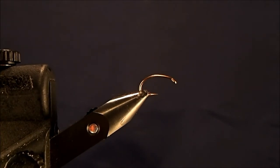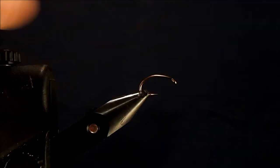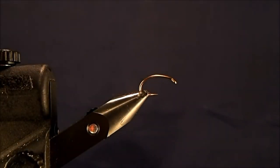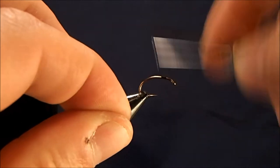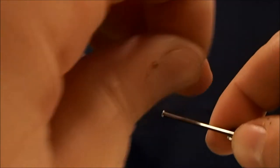This fly that we're going to tie is the brass ass, and I'm starting off with a size 10 scud hook. To that, I'm going to add 7-0 black thread and just start to make my wraps on there.